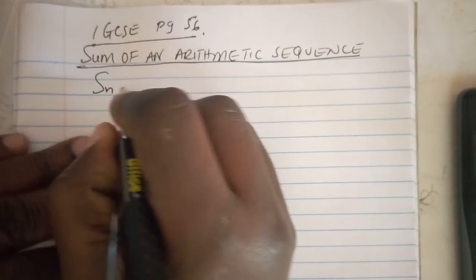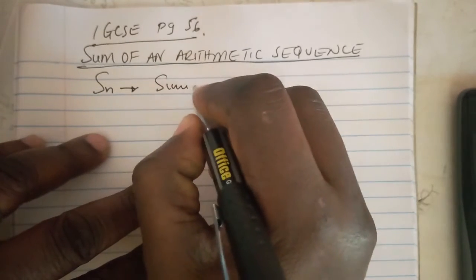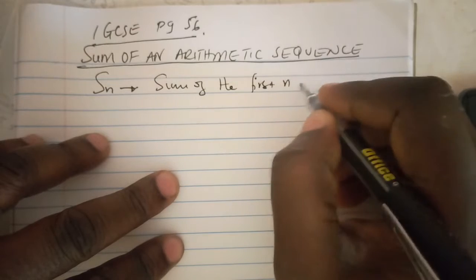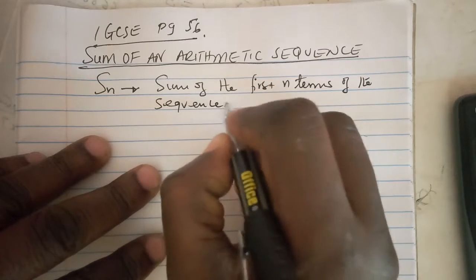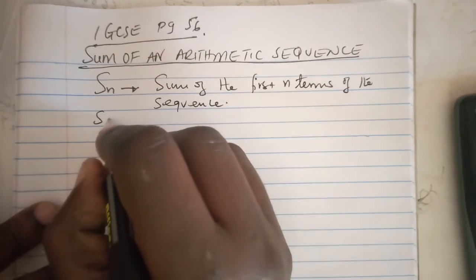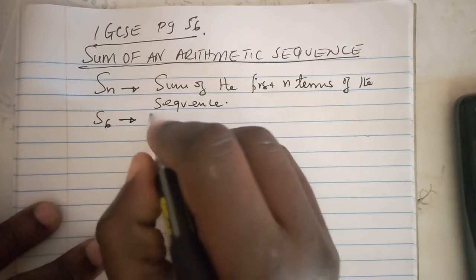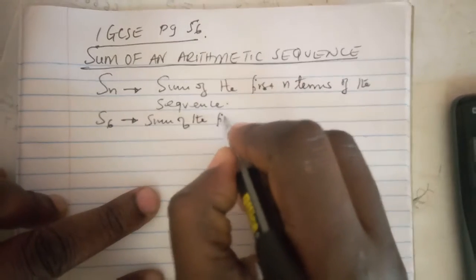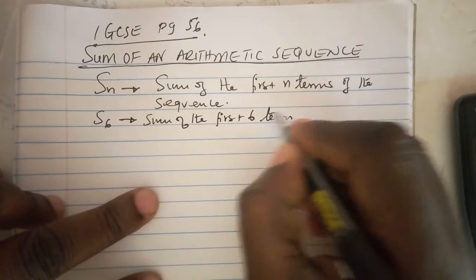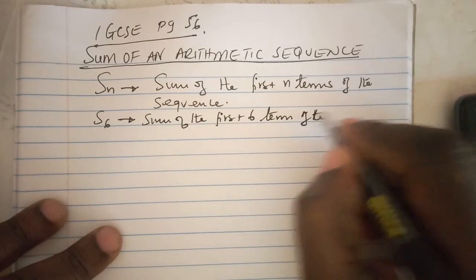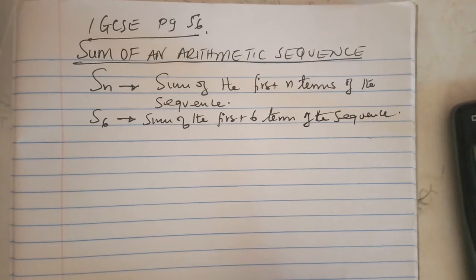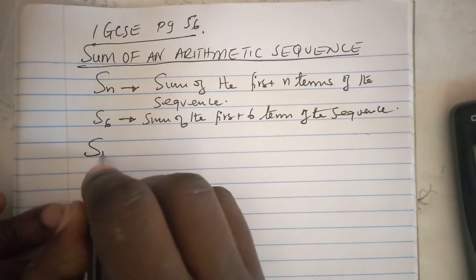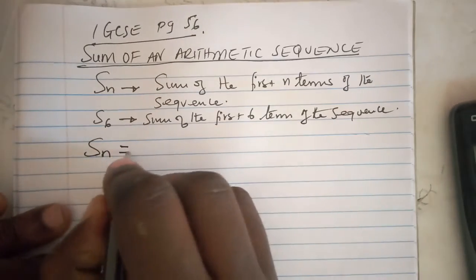When we talk about S_n, this means sum of the first n terms of the sequence. For example, S_6 means sum of the first six terms of the sequence. The sum of an arithmetic sequence, the first n terms, is simply term 1 plus term 2 plus term 3 plus all the way until term n.